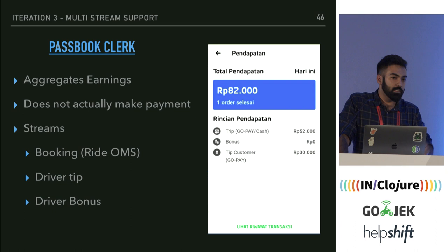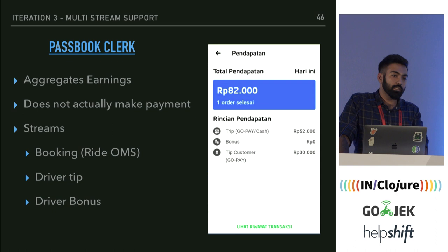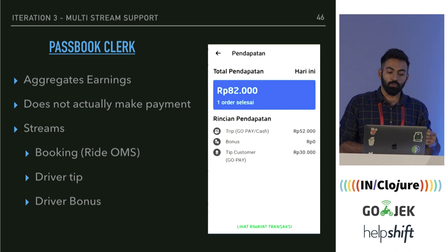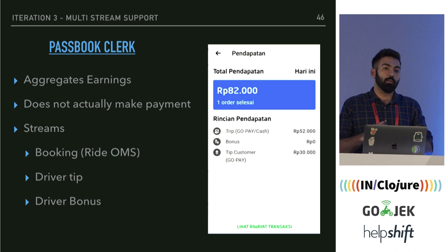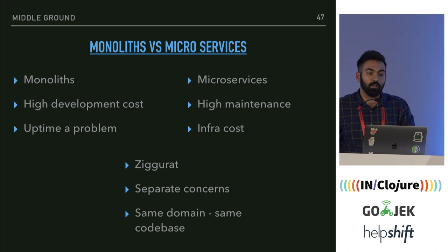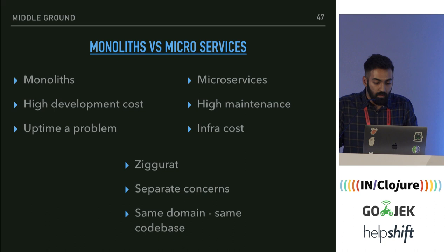Then comes Passbook Clerk. You have a problem where you want to pay drivers and drivers need to know what they've earned throughout the day. A driver can earn in three ways: whenever they complete a booking, they get paid for it; customers can tip drivers through GoPay; and drivers get bonuses after completing a certain number of rides based on domain logic. All three are different streams in Kafka. Ideally, you'd set up three different actors reading from these three streams and aggregate that into a single service.